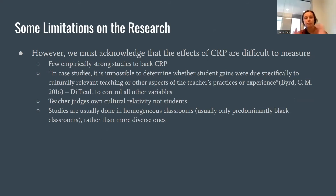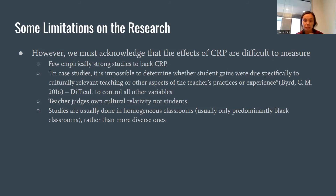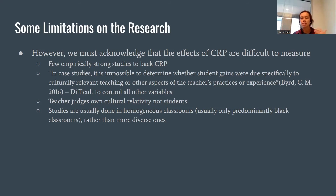Now that we've given a broad overview of what the research says, we must acknowledge some limitations of the empirical data on CRP. There are few empirically strong studies of CRP, for about three reasons. The first is that it's really difficult to control for all other variables when researching and studying the effects of a culturally relevant teacher in the classroom. We all bring a lot as students and teachers, making it difficult to isolate whether CRP is the only factor active in decreasing achievement gaps and increasing student achievement and engagement.